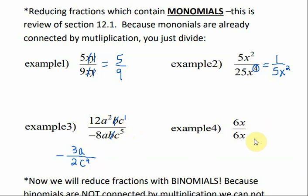And then 6x divided by 6x, a lot of times we use the term cancel out, but remember, anything divided by itself is 1, not 0.